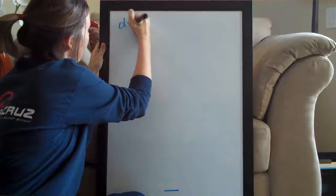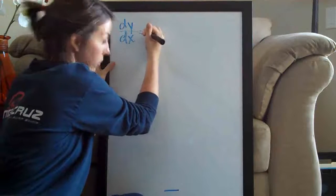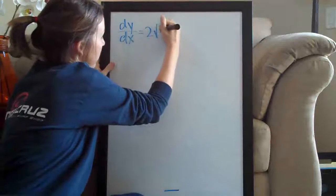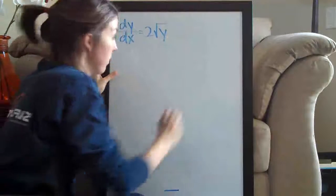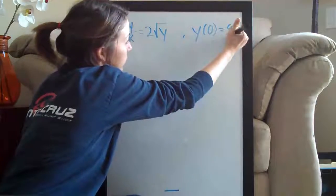It looks like this: dy over dx equals 2 times the square root of y, and they give us an initial condition y of 0 equals 9.